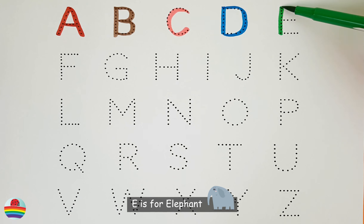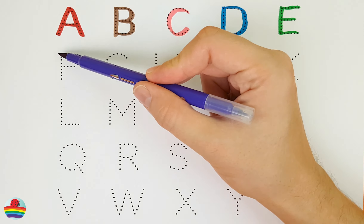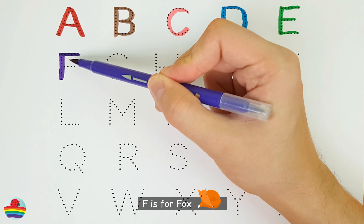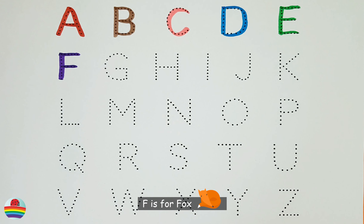E. E is for elephant. E. F. F is for fox. F.